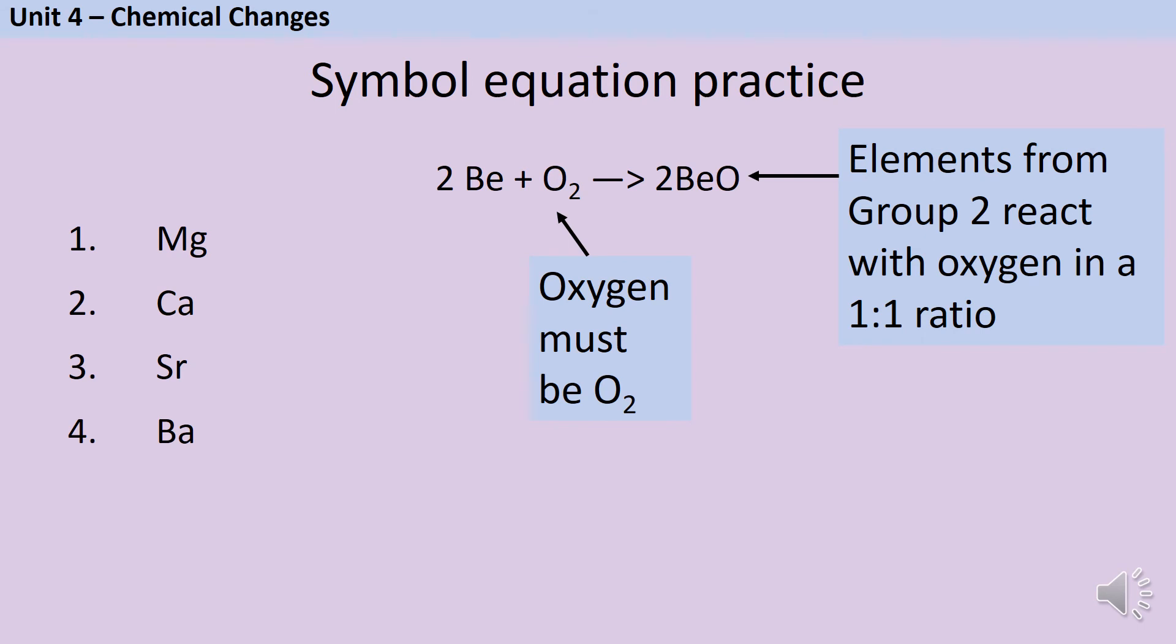Now that you have this pattern, we can do exactly the same thing for the other group 2 elements. Pause the video and write down a symbol equation for each of these reactions. By following the same process, you should have come up with the following equations. You can see that each one takes exactly the same form as the beryllium one.